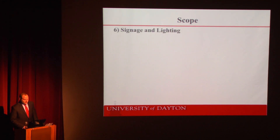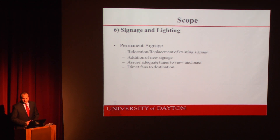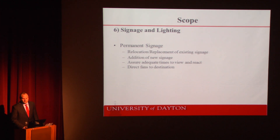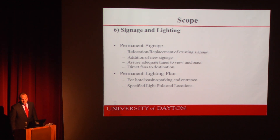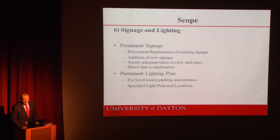Our final scope item is signage and lighting. We designed permanent signage, including relocating and replacing existing signage along expanded highways, and adding new on-site signage to direct fans to their destination. When designing signage, we had to ensure adequate times for vehicles to view and react to signs. We also designed a permanent lighting plan for the hotel and casino parking lot and main entrance, as it is open year-round. A light pole from the Ohio Department of Transportation was specified, with locations chosen based on spacing information provided by the environmental team.